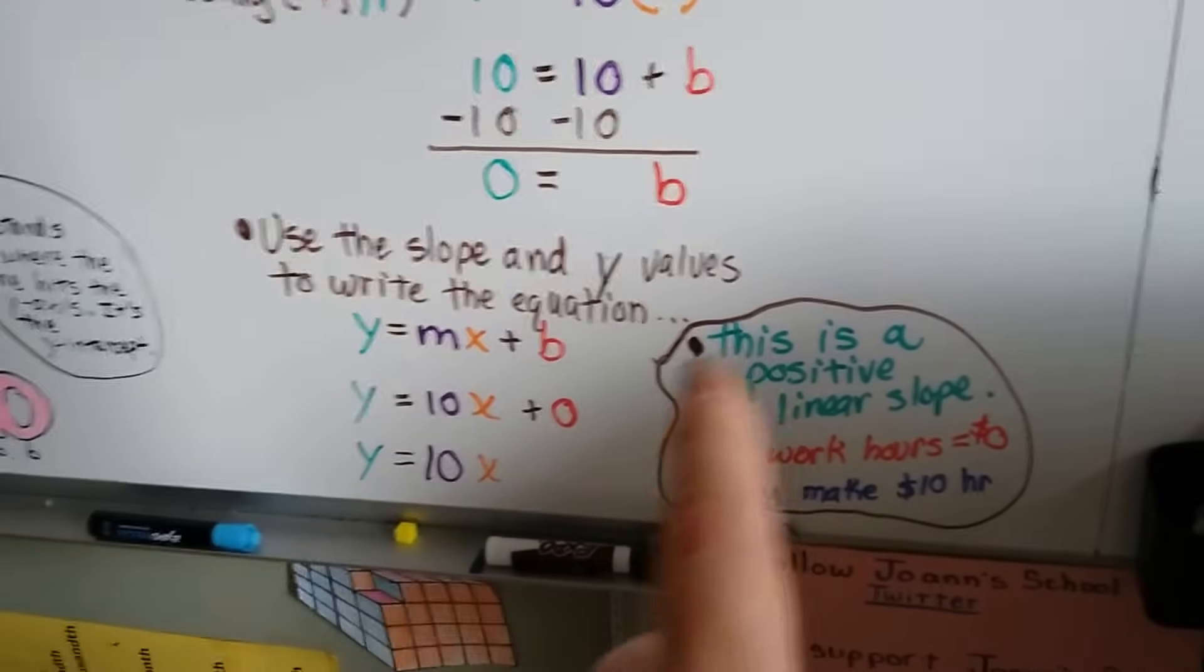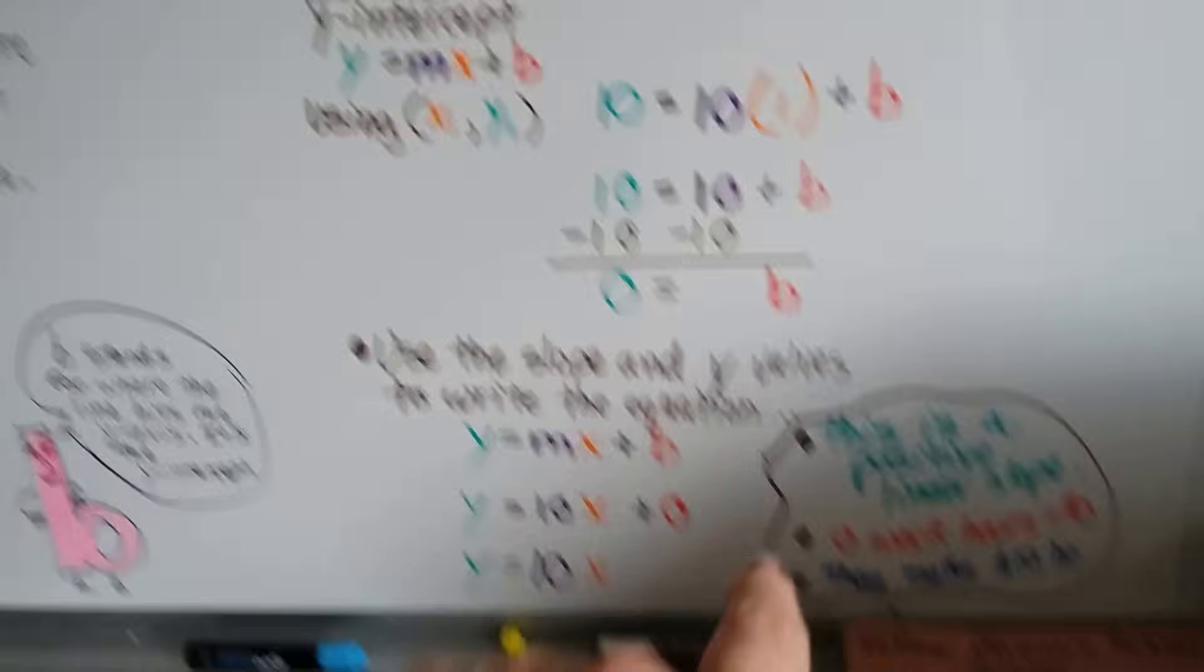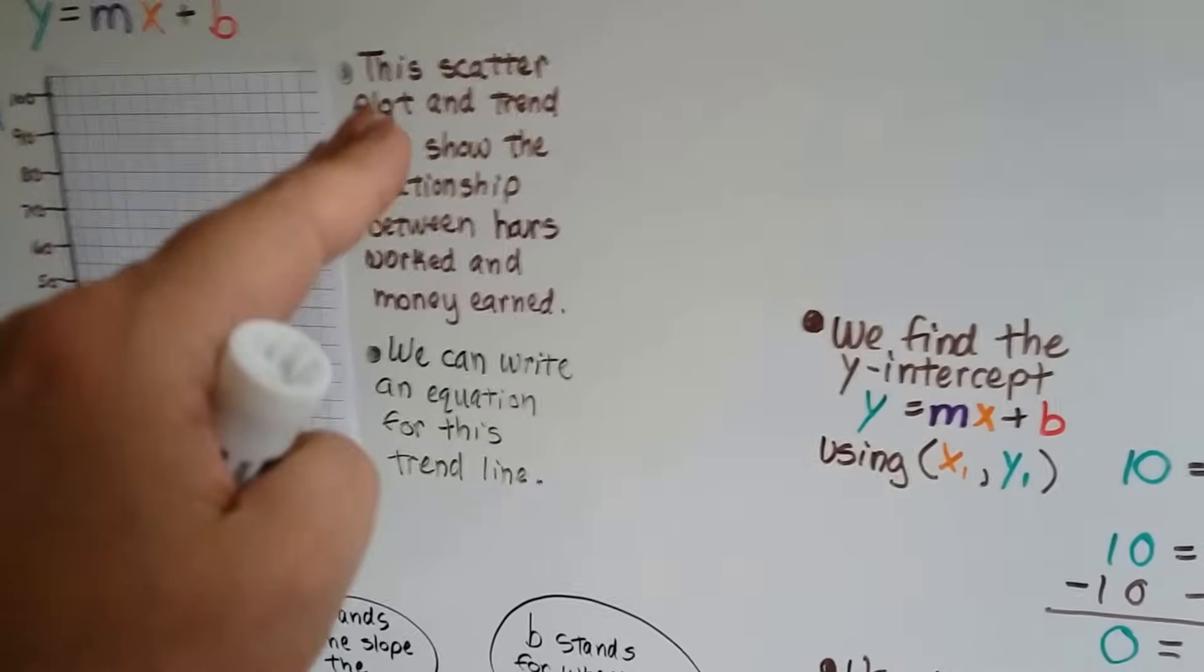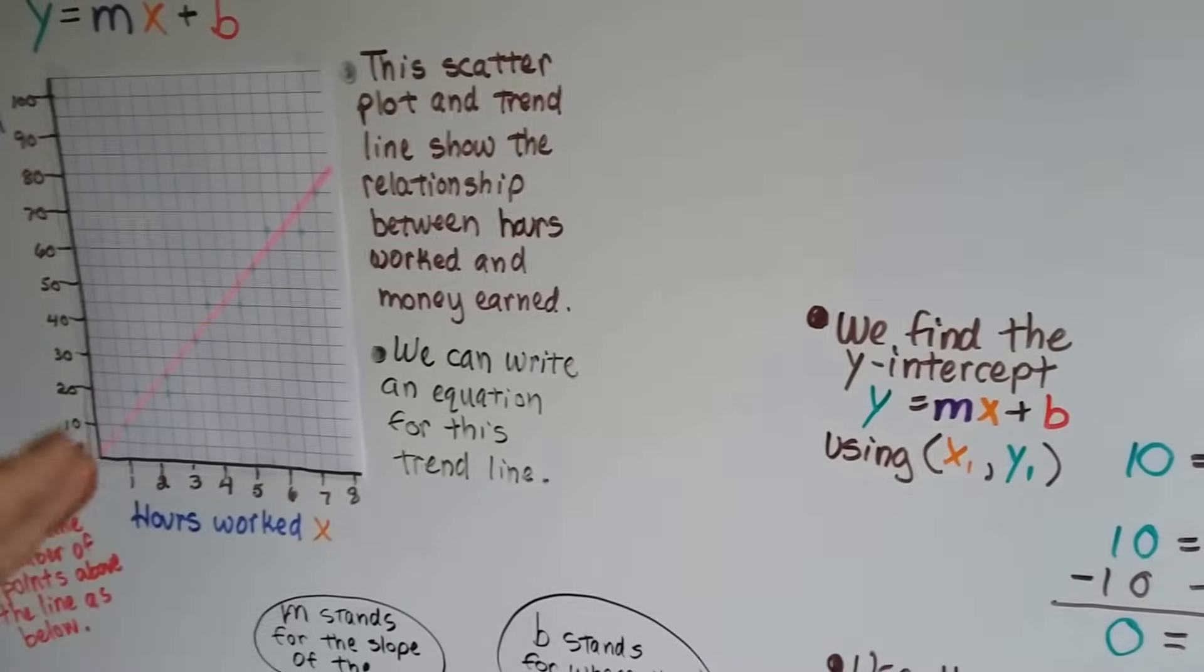Now, this is a positive linear slope. Here's three things I want you to see. This is a positive linear slope. See that? It's going up positive. It's rising to the right.